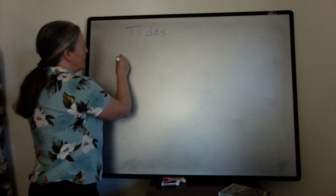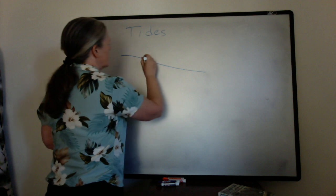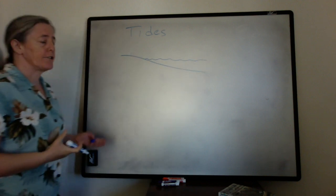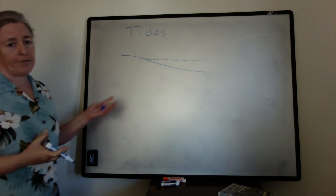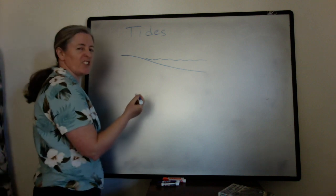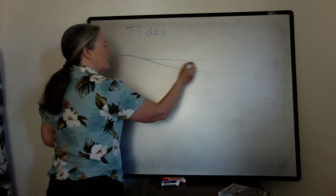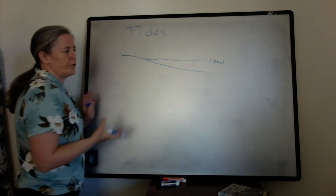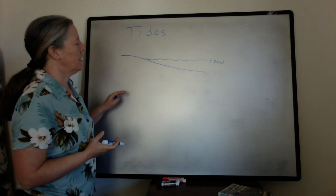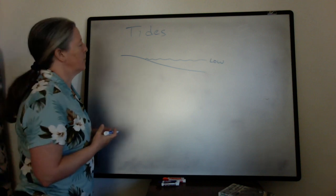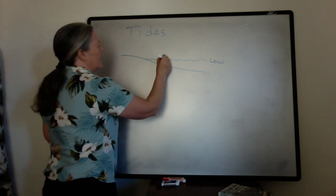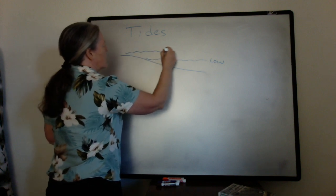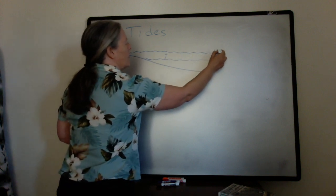So if we have a shoreline here, the gravitational attraction of the moon affects the water levels. It affects Earth as well, but water much more. During certain times of the day, the water level tends to be low, and then the tide will go up.